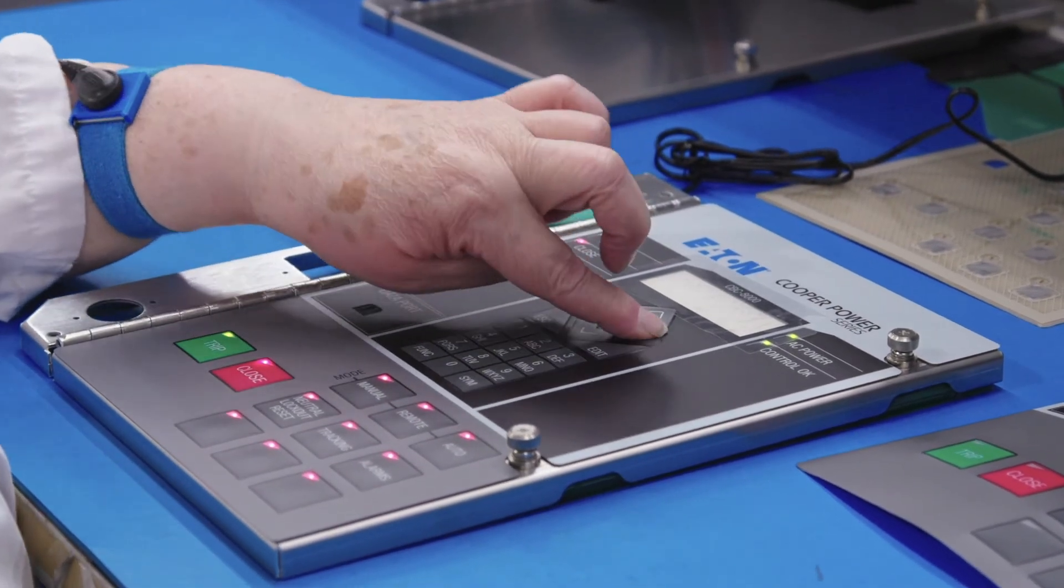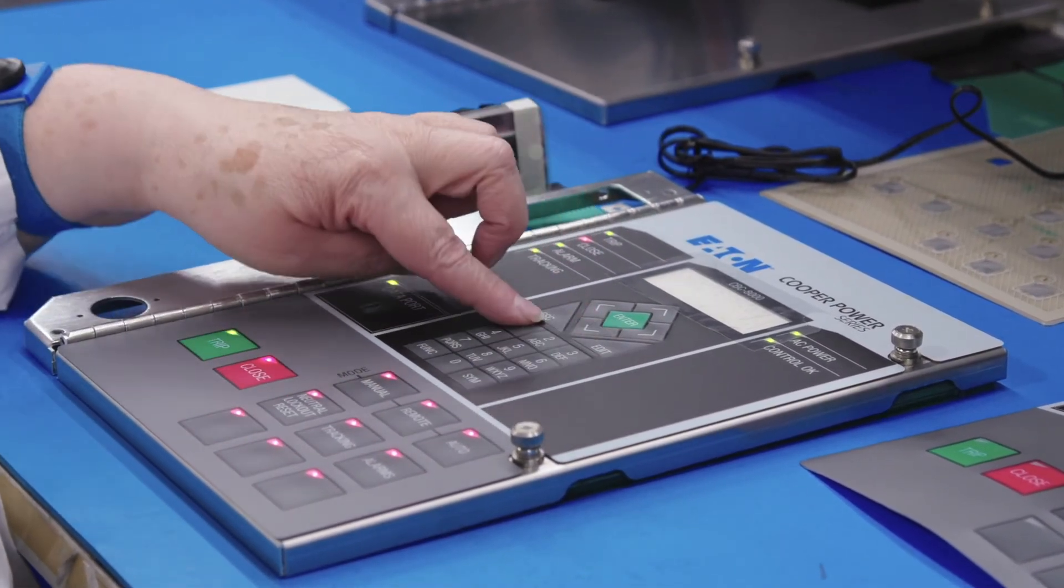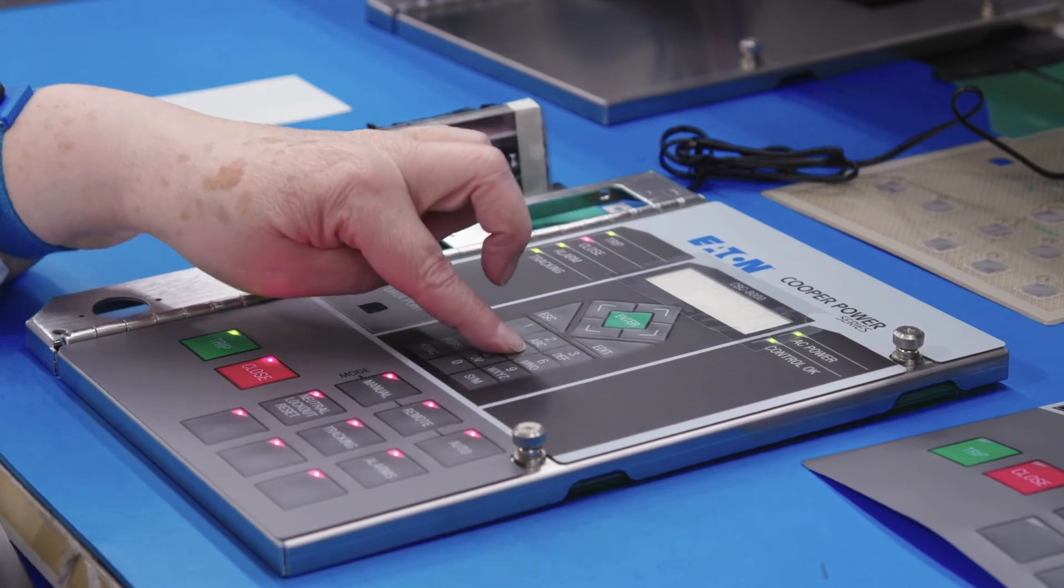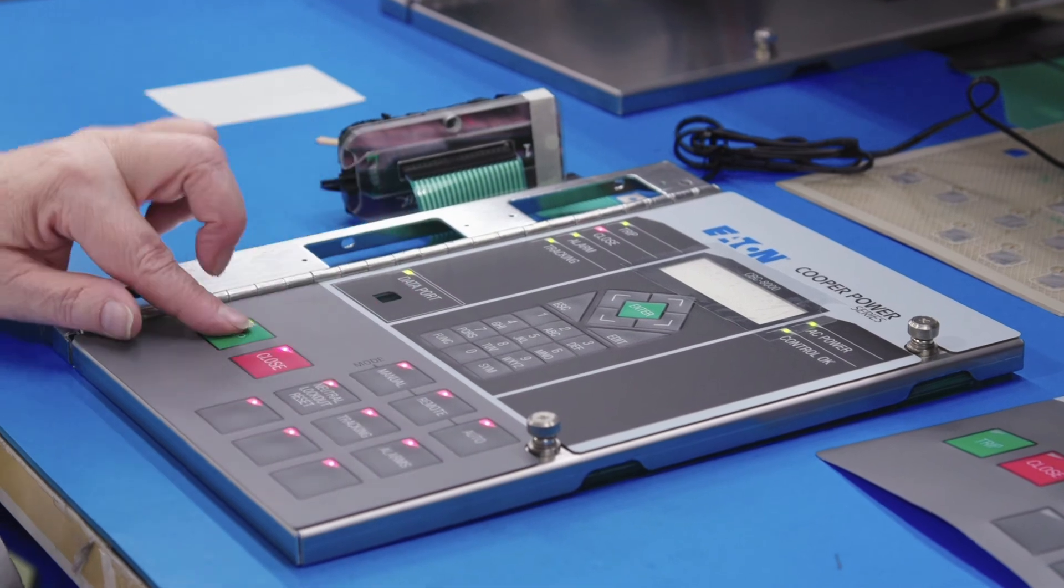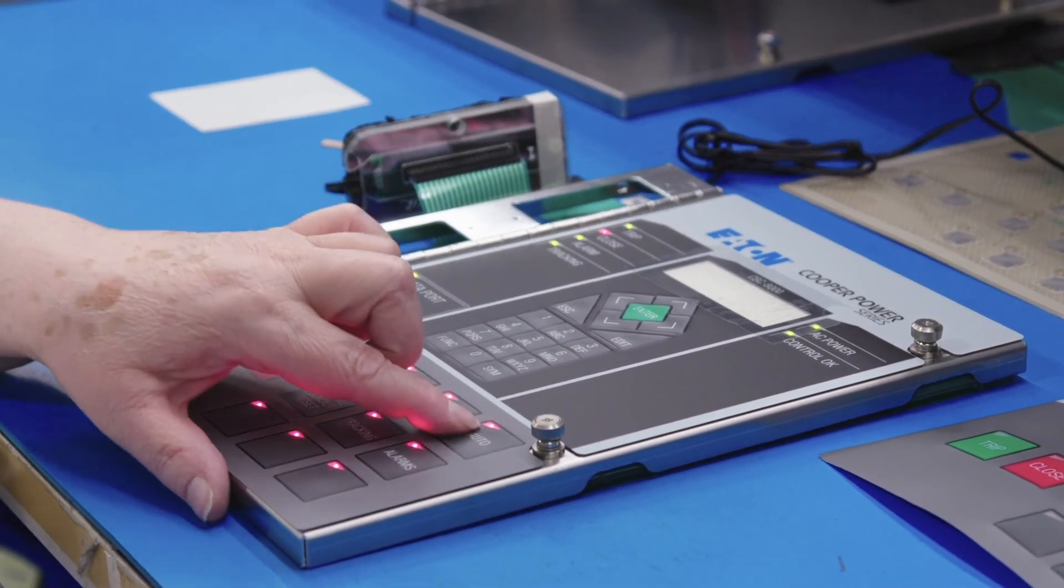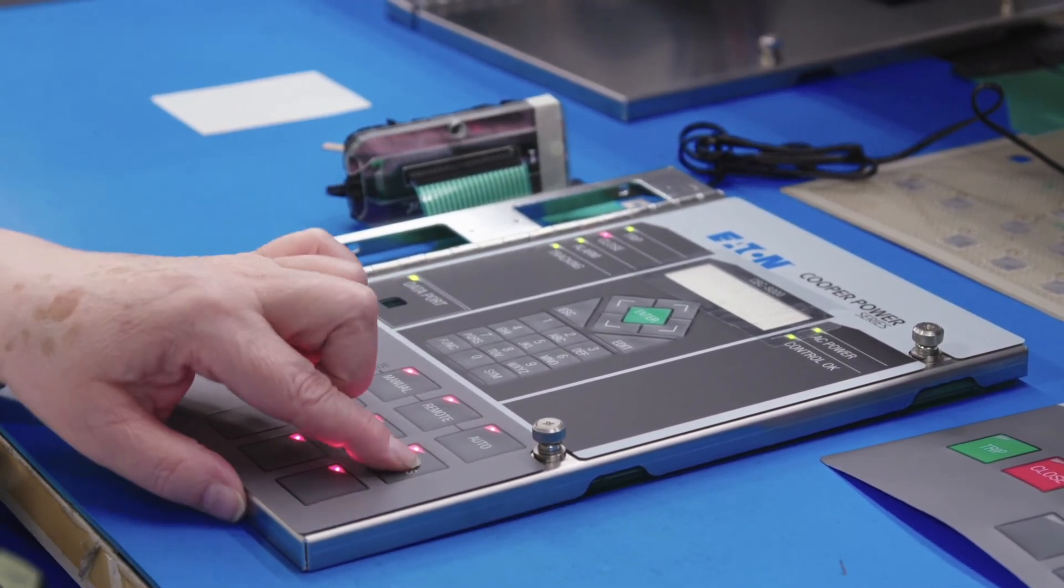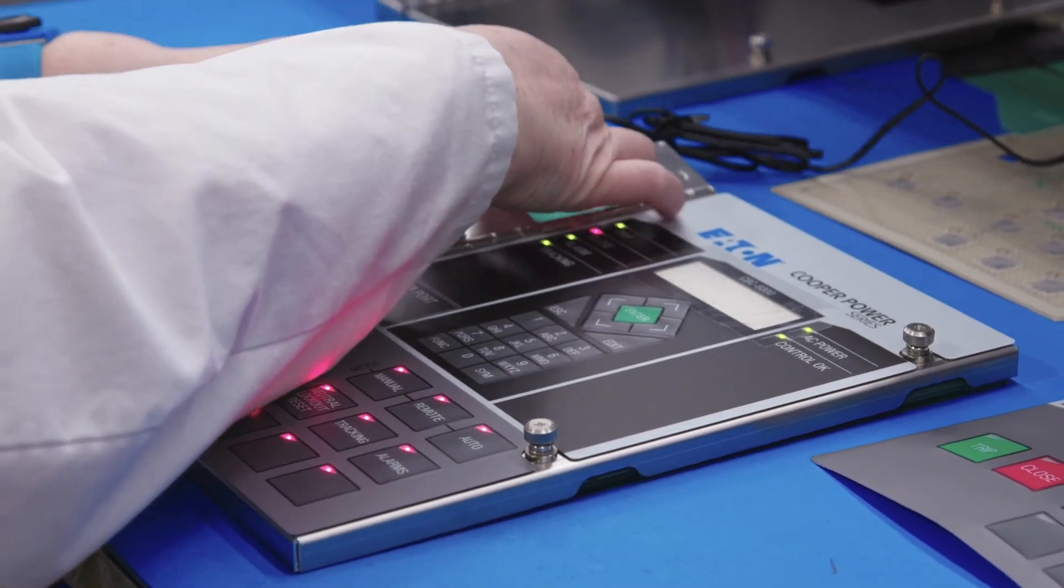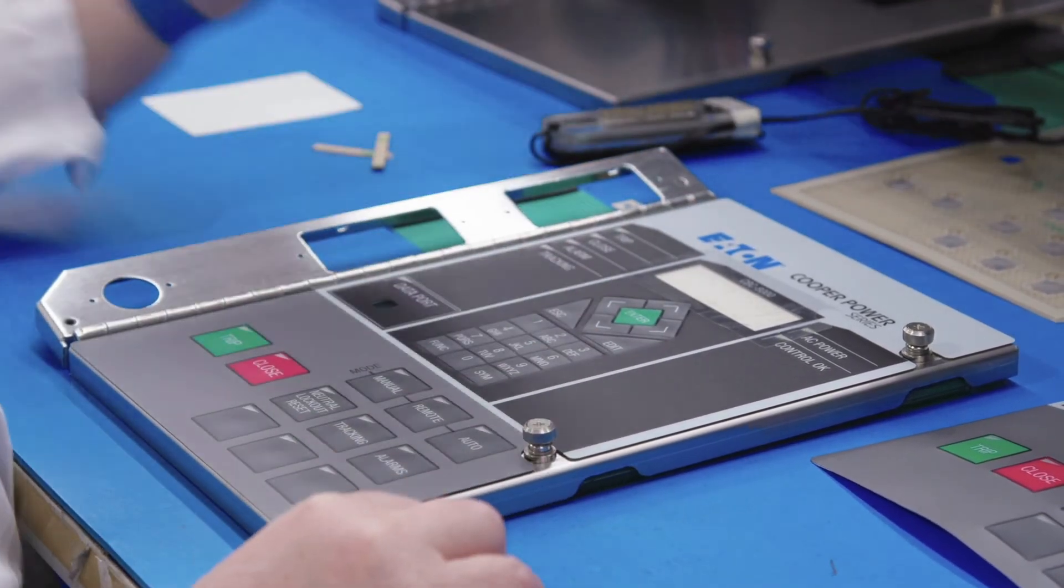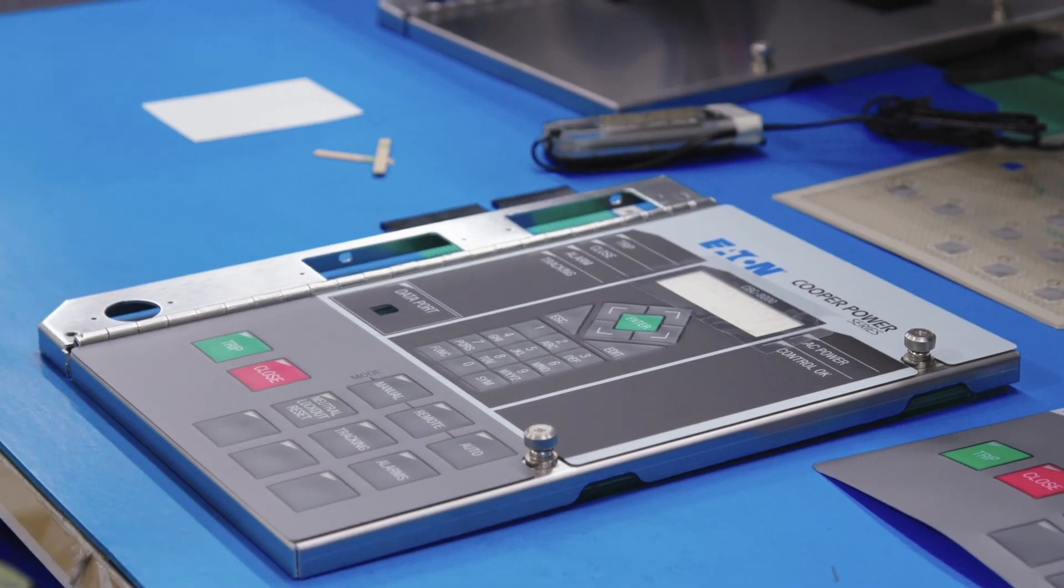And then what's happening here is the assembly person is going through each of the buttons, pressing the metal domes and assuring proper tactile feedback. Ensuring that we haven't inverted the metal domes or flattened them in any way and that we still have normal functionality as intended.